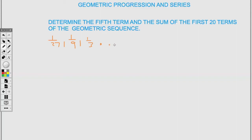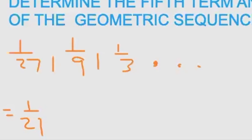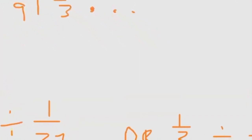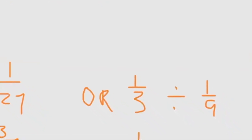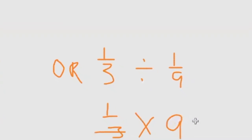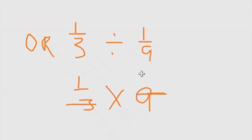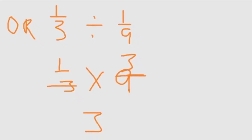The next example asks us to determine the fifth term and sum of the first 20 terms of a geometric sequence starting 1/27, 1/9, 1/3, ... Here, a = 1/27. To find R, divide the second term by the first: (1/9) ÷ (1/27) = 3. We can verify with the next pair: (1/3) ÷ (1/9) — changing division to multiplication and flipping gives 3 again, confirming R = 3.